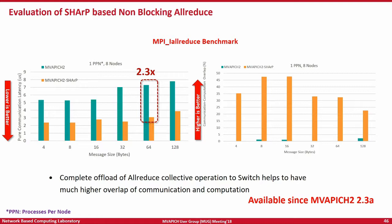MVAPICH2 can pipeline things for large messages, but performance may not be what you expect — you may not get 100% overlap and still need to poke the communication once in a while. For HPC kind of applications, you would still get very good overlap here.